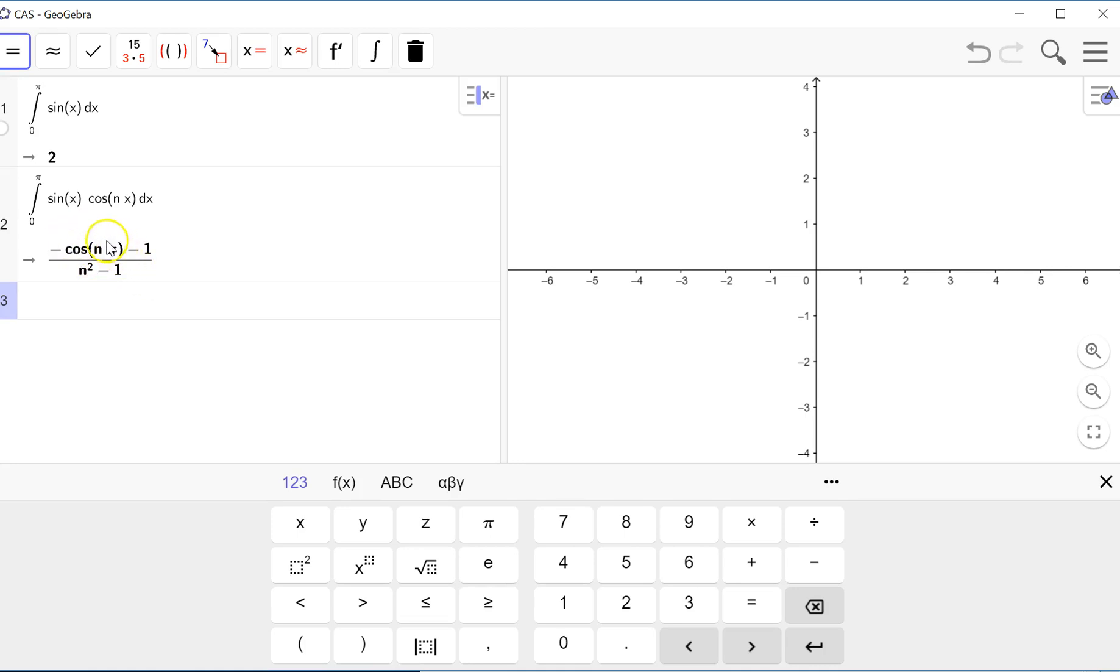One, we can rewrite this cosine of nπ as negative 1 to the n. It's going to alternate between 1 and negative 1. The other thing that I notice is that this denominator is not defined when n equals 1, so we need to handle that separately. So this is like the example we did in class yesterday. So let's just integrate sine x times cosine x from 0 to π, and we get 0. So notice that this constant is 0 when n is 1.